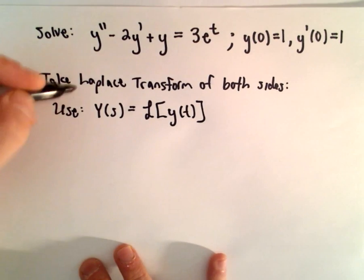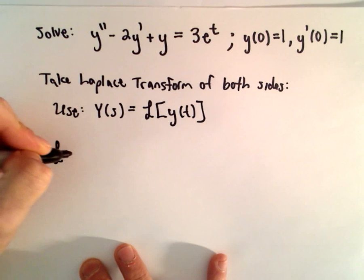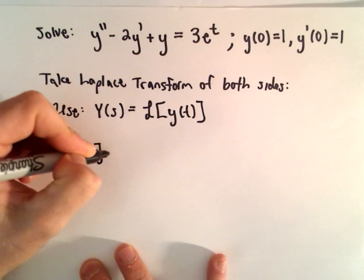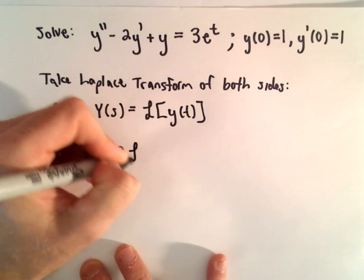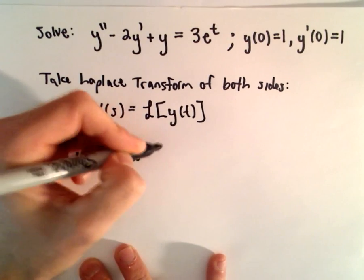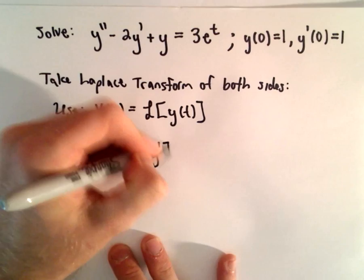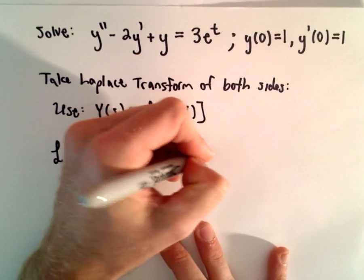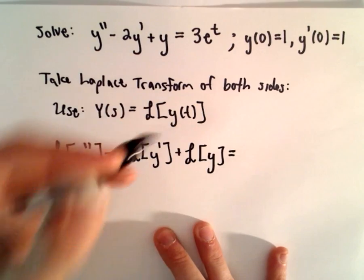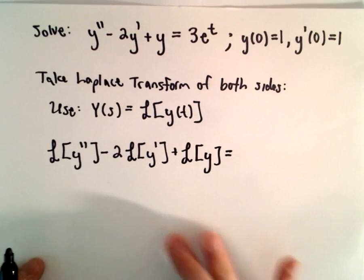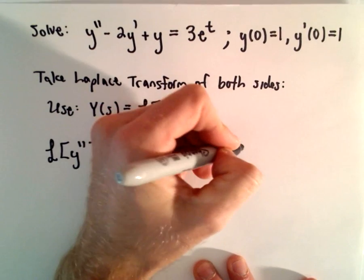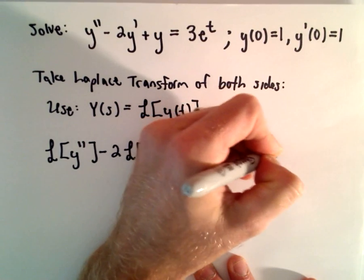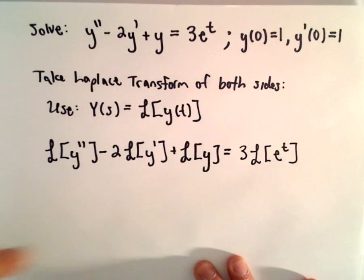I'm going to take the Laplace transform of both sides. We'll have the Laplace transform of y double prime, minus 2 times the Laplace transform of y prime, plus the Laplace transform of just y. On the right side we'll take the Laplace transform — we can factor the 3 out, so we'll find the Laplace transform of e to the t.